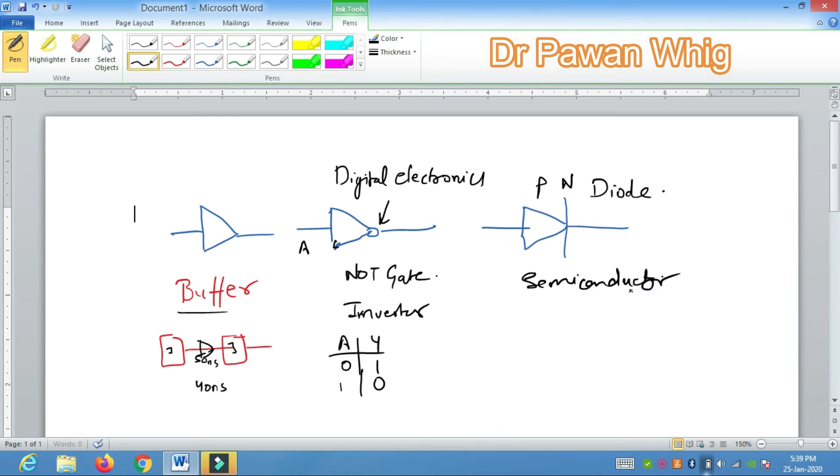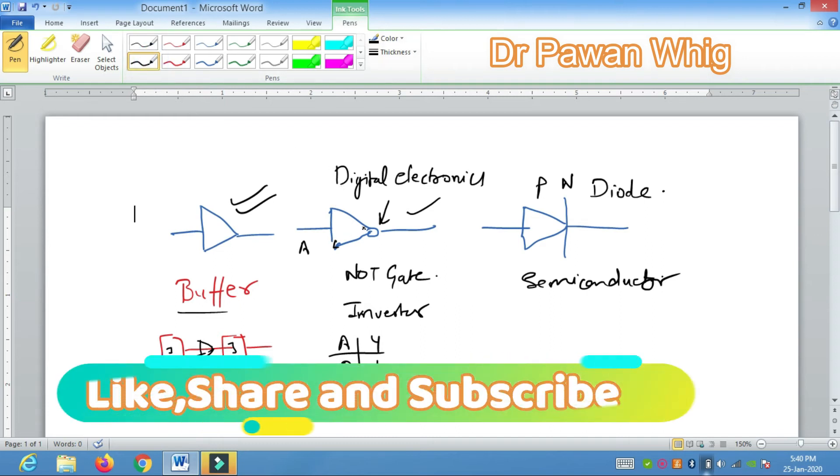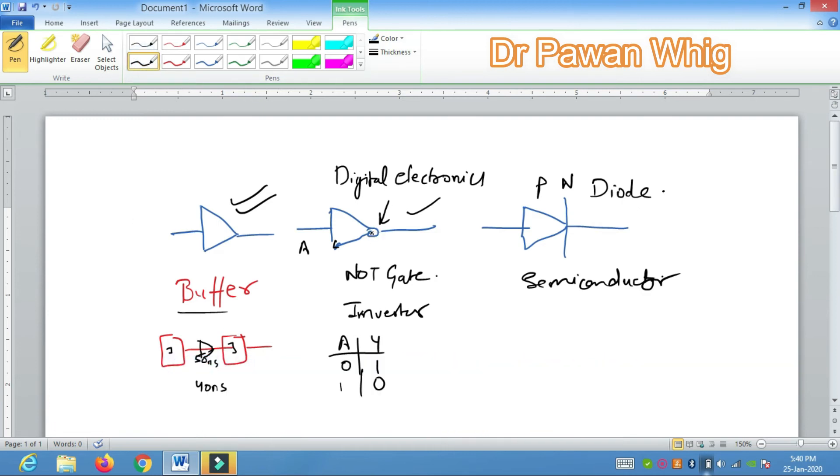So here in this lecture I would like to explain the basic difference between these three symbols: buffer, NOT gate, and semiconductor PN Junction Diode. In my early videos also, I think I did a little bit mistakes in which there is no bubble and I am saying it is a NOT gate, but particularly in a NOT gate there is a bubble. Mind it, this is very important and I request you to just correct it. If I did some mistake then I apologize for that.